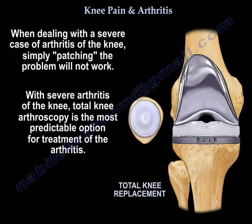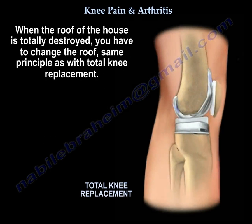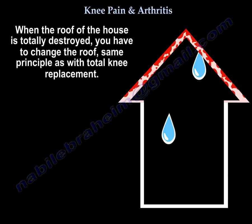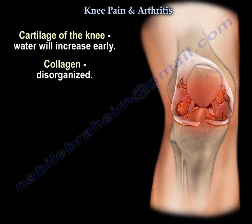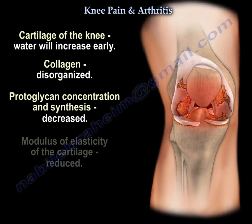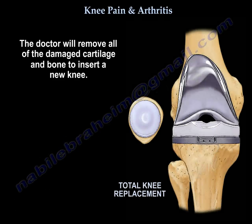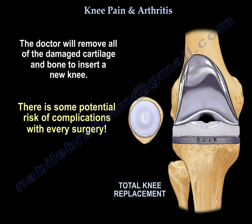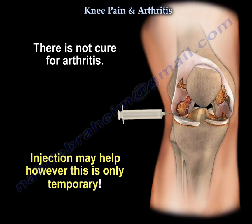When the arthritis is severe, total knee replacement is the most predictable treatment option. You need to reduce pain and improve the function of the knee — just like when a roof is totally destroyed, you have to change the roof. In the cartilage of the knee, water content increases early, collagen becomes disorganized, and proteoglycan concentration and synthesis decrease. The modulus of elasticity is reduced. The doctor will remove all damaged cartilage and bone and insert a knee replacement. There is no cure for arthritis; injections may help but are only temporary.